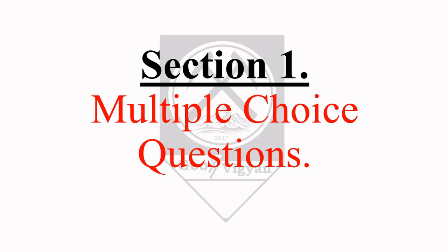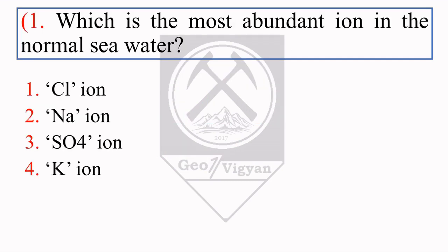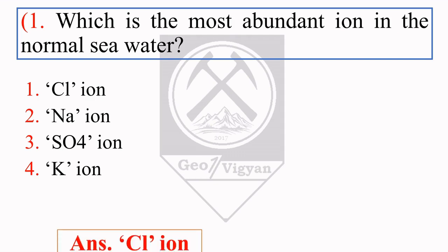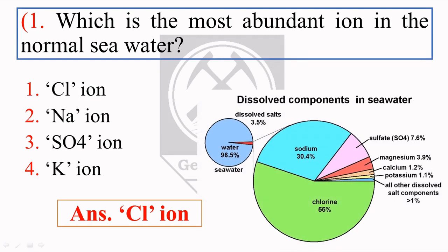The first section is multiple choice questions. The first question is: which is the most abundant ion in normal sea water? The options are Cl, Na, SO4, and K. The maximum number of participants opted for Na ion, but the right answer for this question is Cl ion, as you can see in this chart — chlorine has 55% and sodium has only 30.4%.